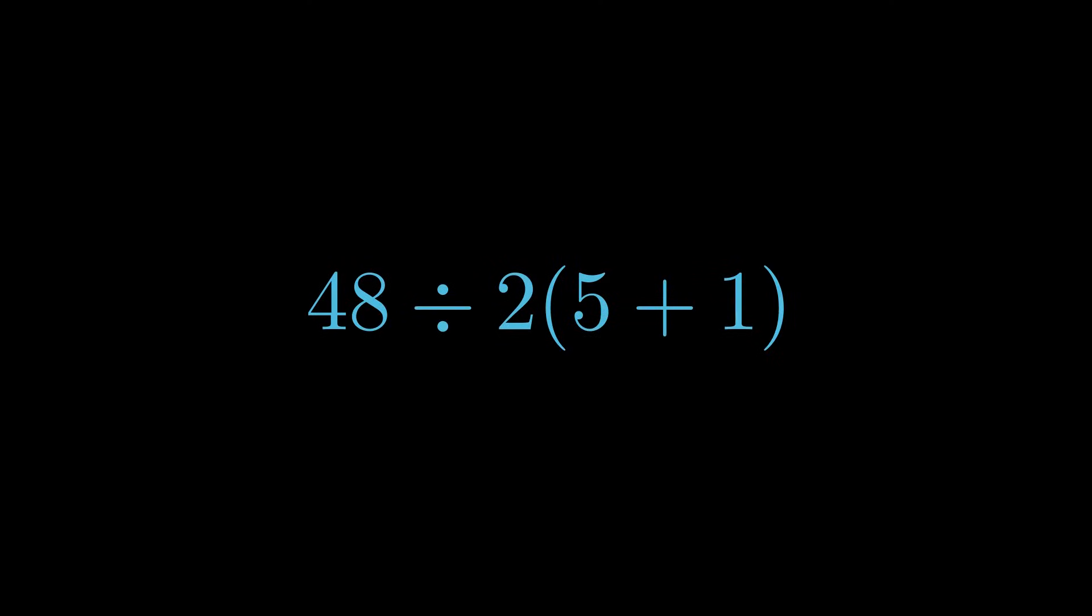Let's apply the rules. Parentheses first. 5 plus 1, straightforward enough, which gives us 6. Now this 2 times 6 is just implied multiplication. Let's make it explicit. Here's the key moment.